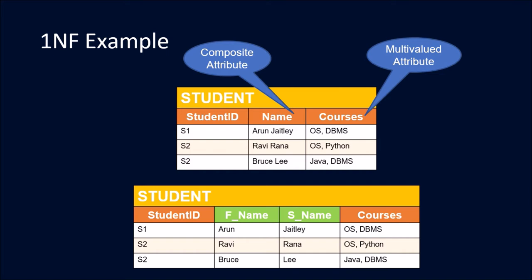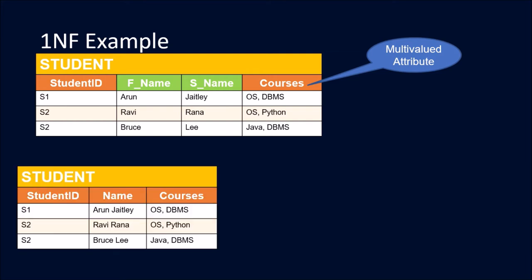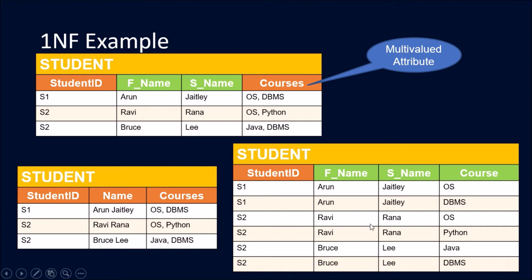To fix this, we split the name attribute into two columns: first name and second name. For the courses multi-valued attribute, we repeat the student row for each course — so if student one has two courses registered, those appear in two different rows.